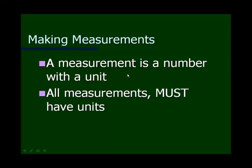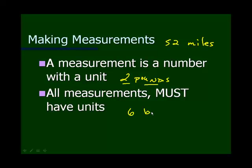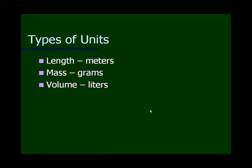You might be used to seeing measurements like two pounds — you've got a number, two, and a unit, pounds. Or maybe 52 miles: 52 is the number, miles is the unit. Or something like six books: six is the number, books is the unit. A number with a unit constitutes a measurement.